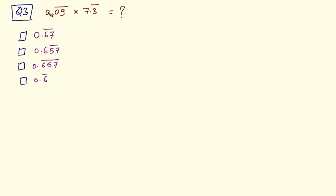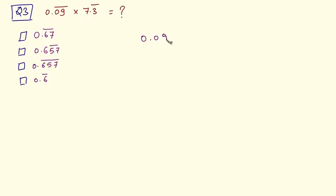What's the value of 0 point recurring 09 multiplied by 7 point recurring 3? You cannot directly perform operations between recurring decimal fractions as it becomes very difficult. So what you can do is convert these recurring decimal fractions into simple fractions and then perform operations amongst those simple fractions. So we have 0.09 in which 09 is recurring, multiplied by 7.3 in which 3 is recurring.